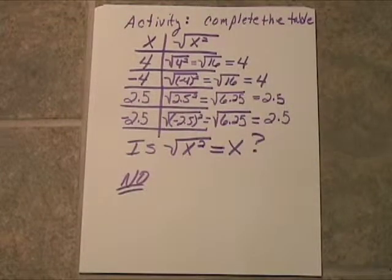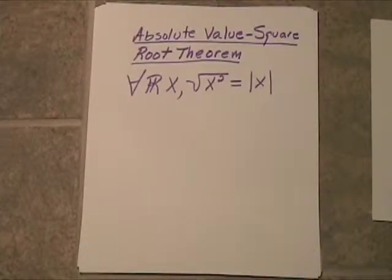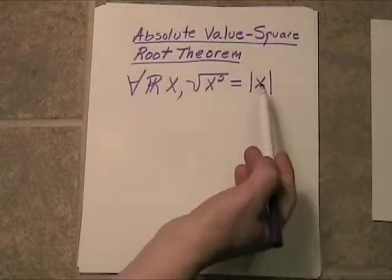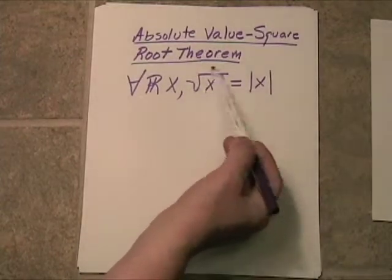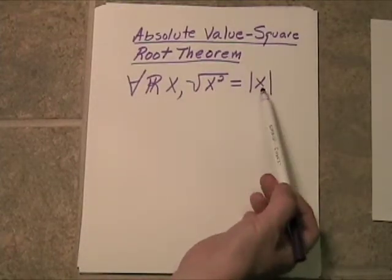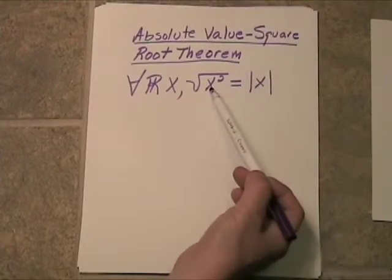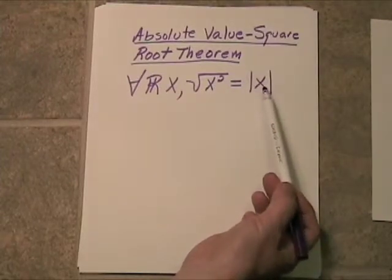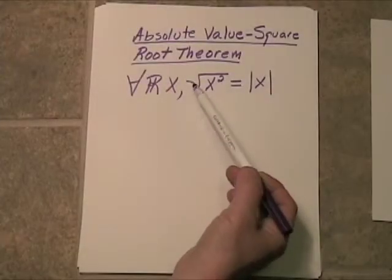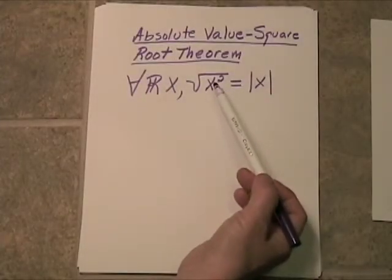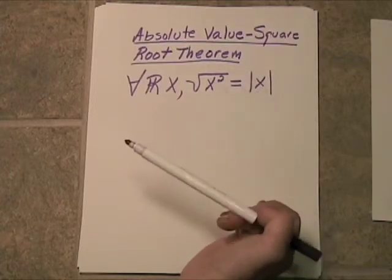So, this brings us to the absolute value square root theorem. For all real numbers x, the square root of x squared is always going to be the absolute value of x. You will always get a positive answer here or zero. If you plug a zero in here, you would get the absolute value of zero, which is zero. So, square rooting an x squared cannot give you a negative answer.